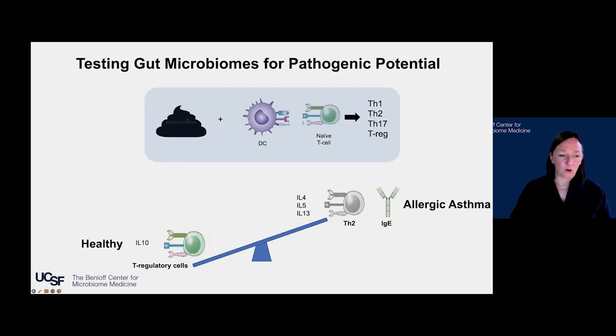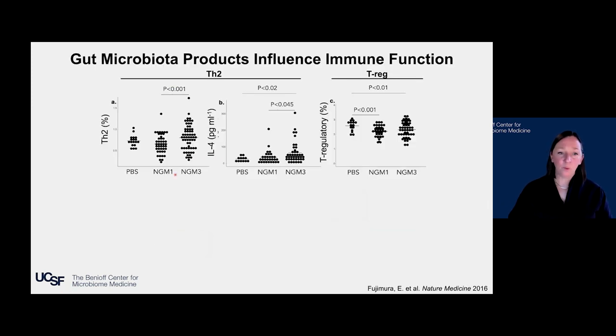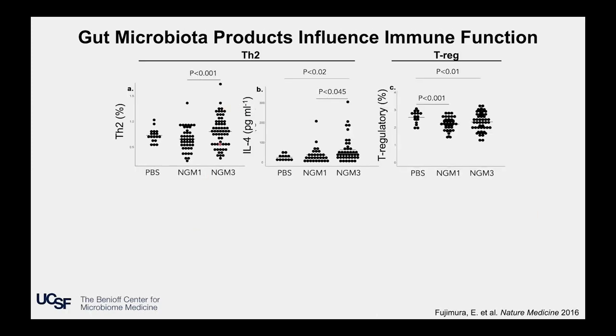When we performed our assay, what we found was that the high-risk gut microbiome expanded the number of TH2 cells and increased their production of the inflammatory cytokine IL-4. In parallel, it reduced the frequency of regulatory T cells. In essence, the small molecules produced by the high-risk one-month-old infant gut microbiome could recapitulate the cardinal features of allergic inflammation in vitro in a test tube.